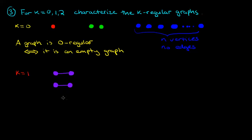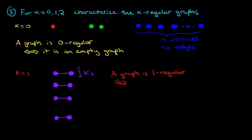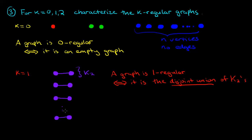Anytime I want to add in a new vertex, I have to add in a second vertex so that it can have degree one. I can continue to put in any number of these. Notice that each one of these pieces is K2, or the path on two vertices. So a graph is one regular if and only if it is the disjoint union of K2s — complete graphs on two vertices. It's easy to see that a collection of K2s is definitely one regular, and the only way to build a one regular graph is to have some collection of K2s.